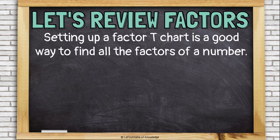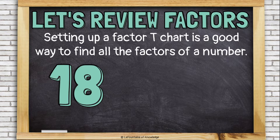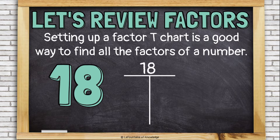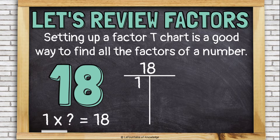Setting up a factor T-chart is a good way to find all the factors of a number. Let's look at the number 18. We can set up a T-chart by drawing a large letter T and writing 18 at the top. Now we can use this to help us find all of the factors of 18. We start at 1 and think: is 1 times anything 18? Yes, 1 times 18 is 18. And I call this the freebie factor pair, because for any number, 1 times the number itself is going to be a factor pair. We want to go in order to make sure we don't miss any.